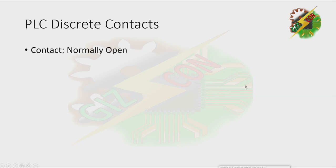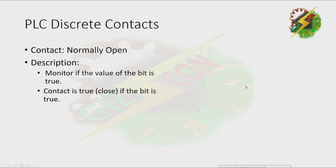Let's start with normally open. For the normally open contact, it monitors if the value of the bit is true — the contact is closed or true if the bit is true. This is the symbol for normally open, and its function is like the normally open switch.